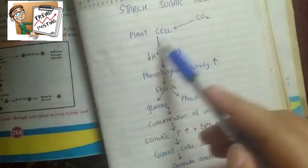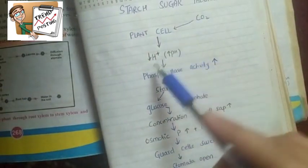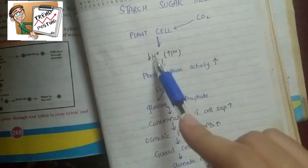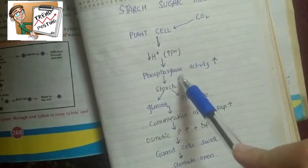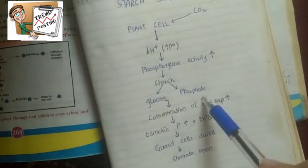For the starch-sugar theory, I've made flow charts like this: Plant cells absorb carbon dioxide, which decreases hydrogen ion concentration and increases pH. When pH increases, phosphorylase activity increases, and starch converts to glucose-1-phosphate.